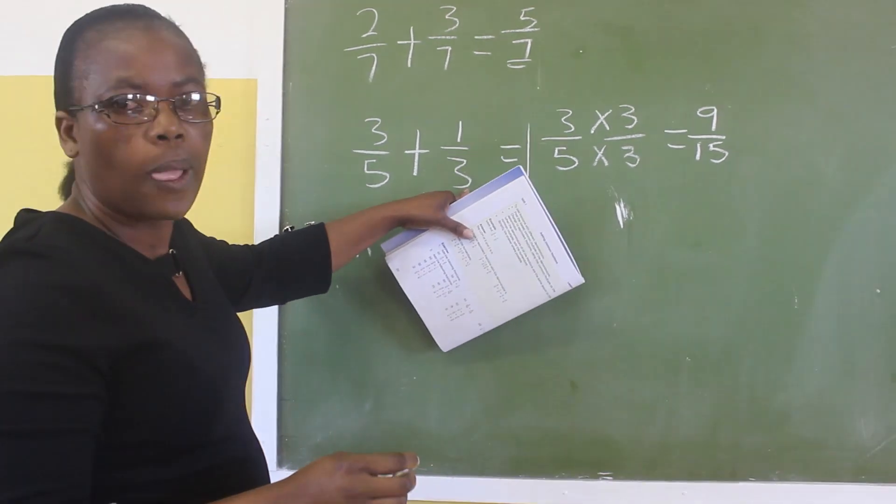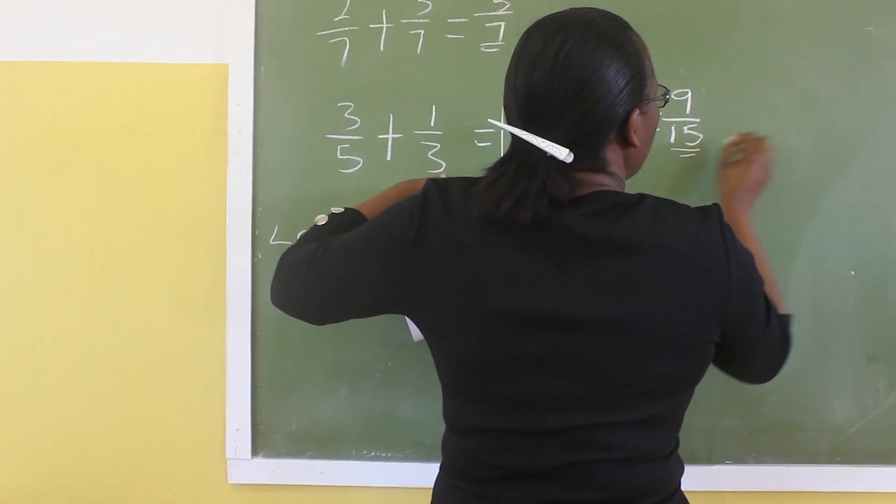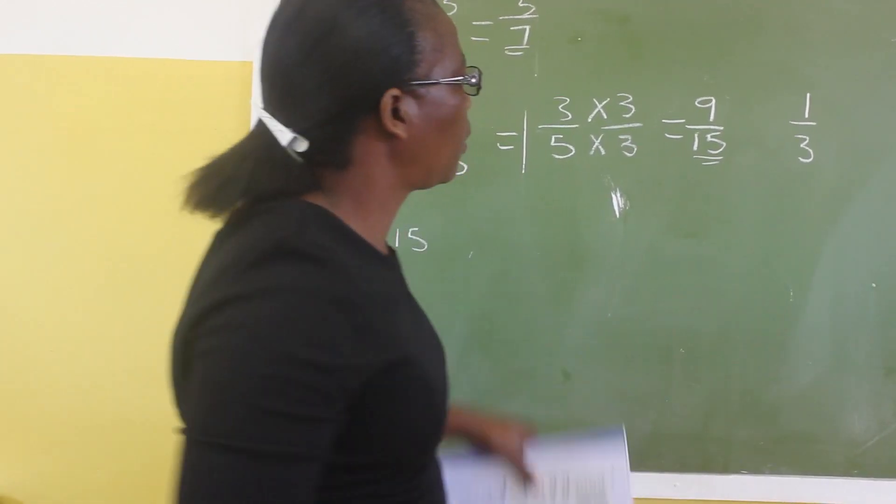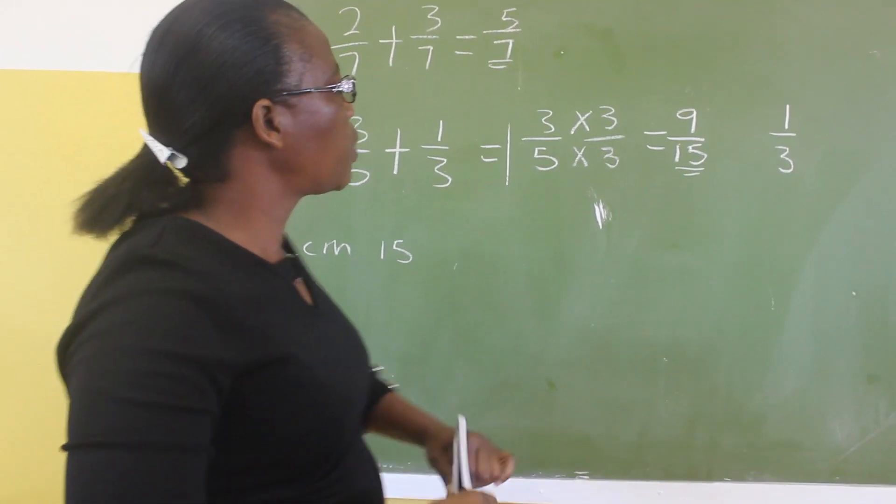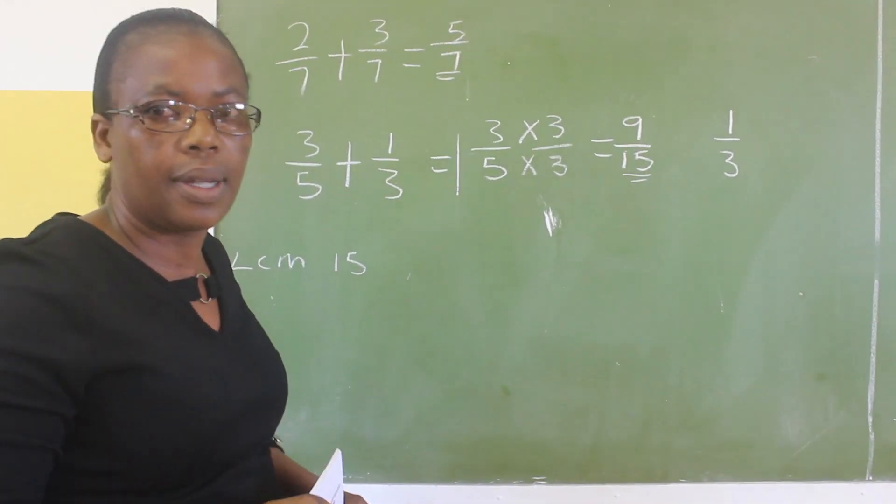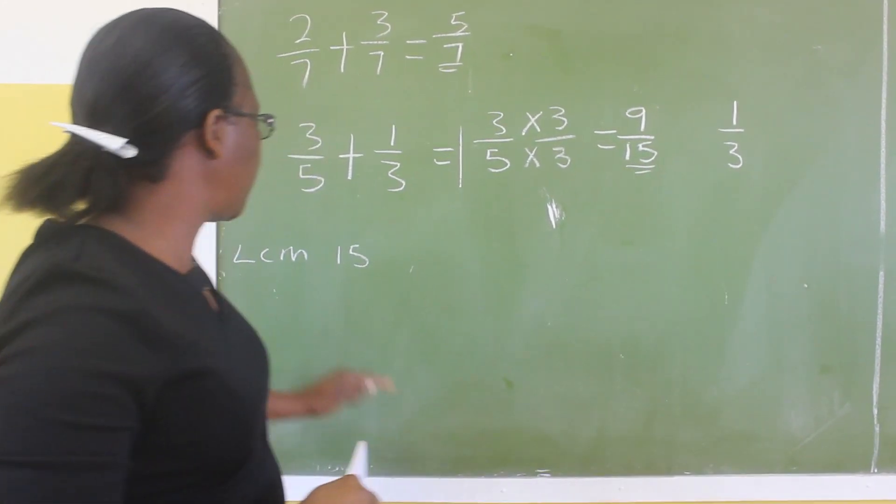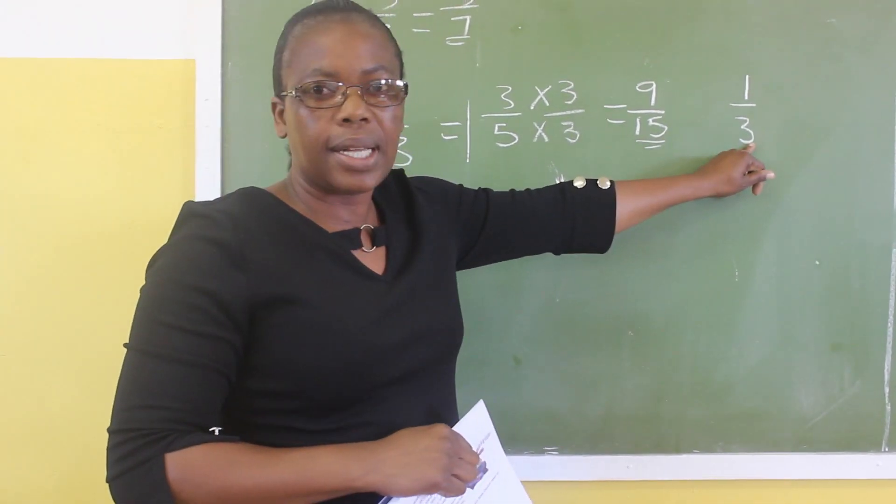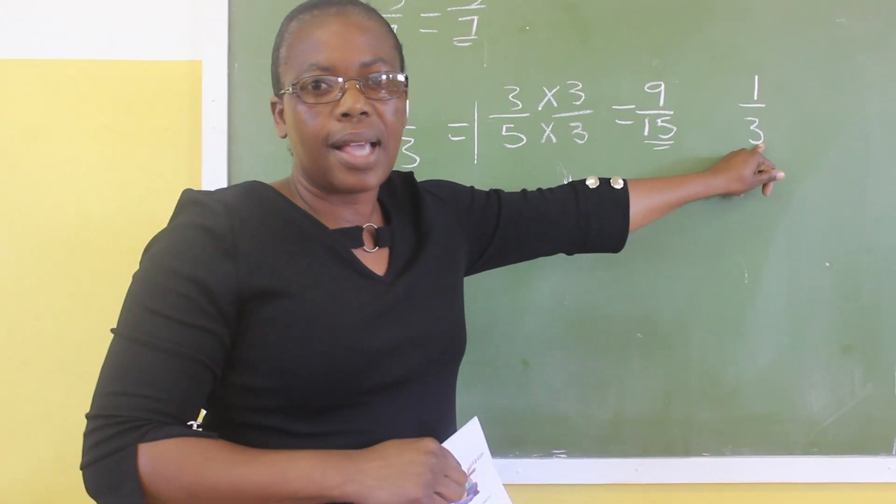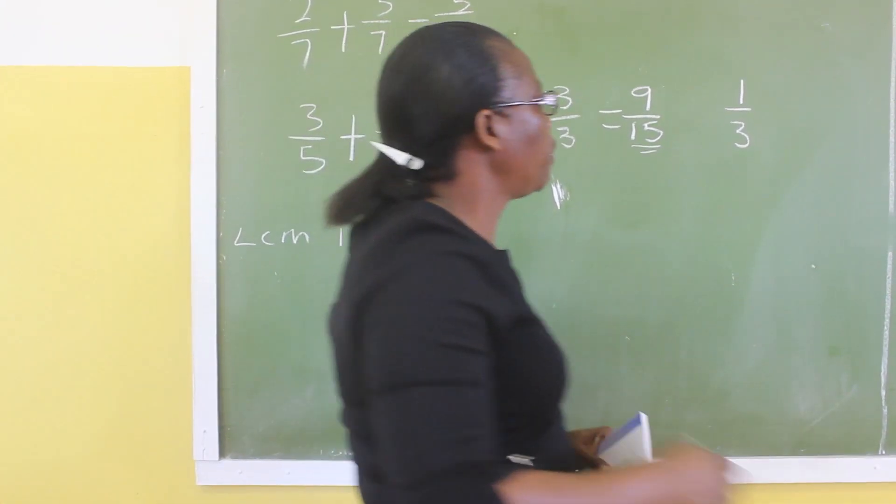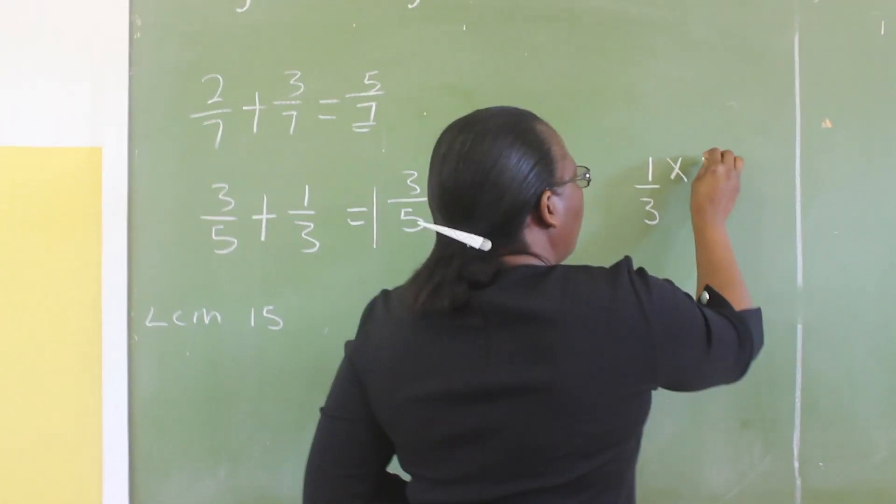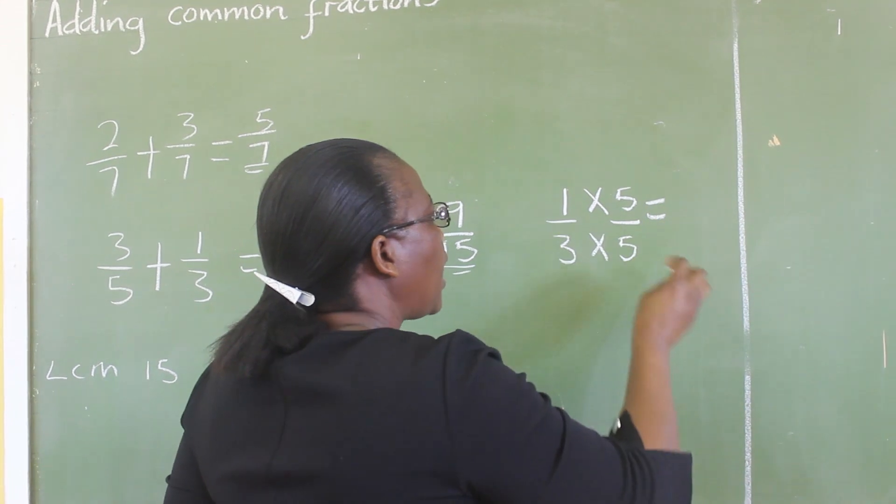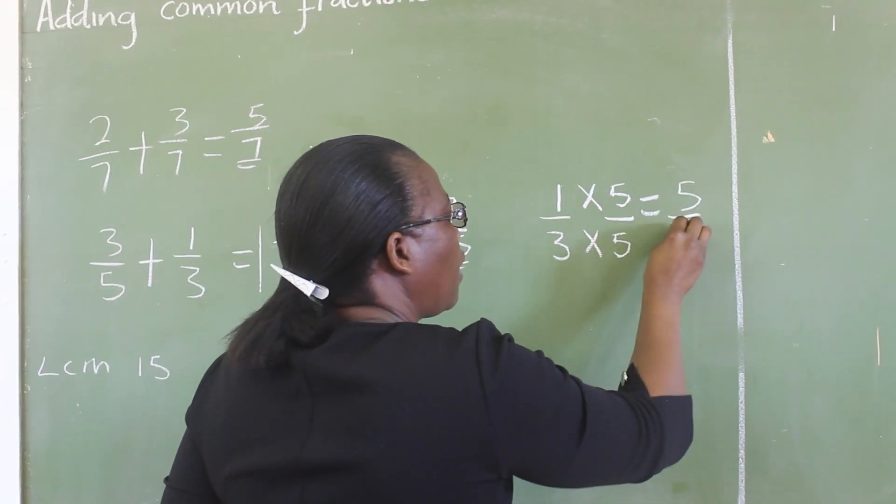Take this one now, one third. We want to change also this denominator to 15. You just divide our lowest common multiple by this denominator 3, and the answer is 5. So you are multiplying the numerator by 5 and the denominator by 5. So the answer is 5 over 15.